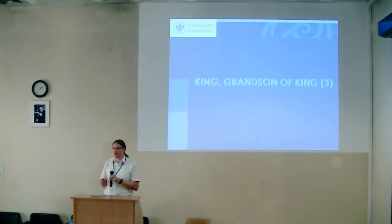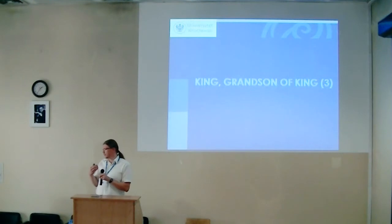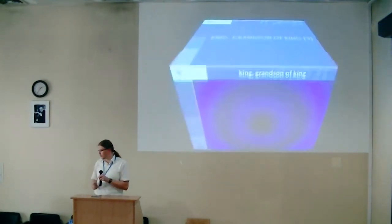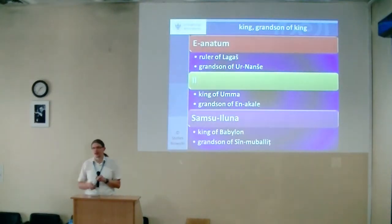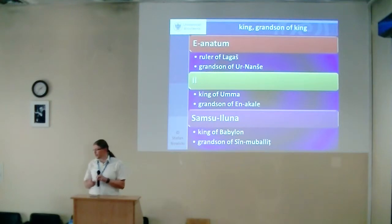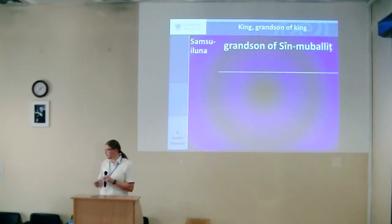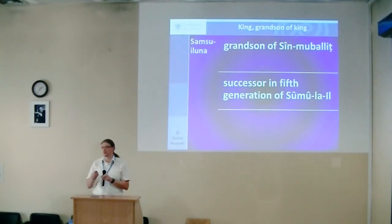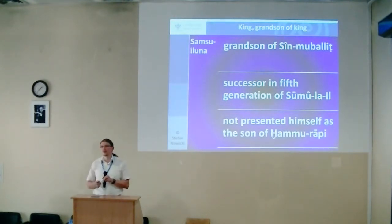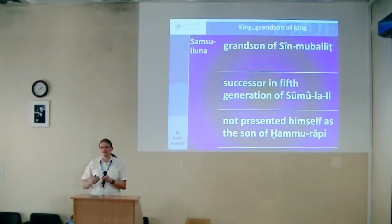There are only three cases where a king names himself as grandson of a king rather than son. These are: Eannatum, ruler of Lagash, grandson of Urnansha; Il, king of Ummah, grandson of Anakale; and Samsu-iluna, king of Babylon, grandson of Sîn-muballiṭ. The last case is most interesting: Samsu-iluna is grandson of Sîn-muballiṭ and successor in the fifth generation of Sumulail, yet — being the son of Hammurabi — he does not present himself as son of Hammurabi. It is quite strange why he chose grandfather Sîn-muballiṭ and distant predecessor Sumulail rather than the great Hammurabi.